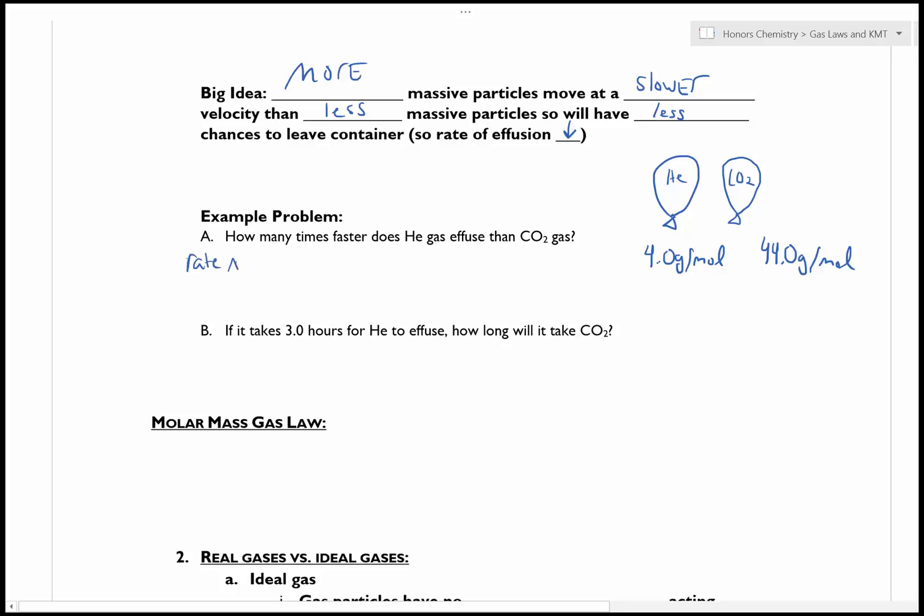My expression is the rate of A over the rate of B is equal to the square root of the molar mass of B over the molar mass of A. All right, so I'm going to solve for this. So I want, how many times faster is He effused than CO2? So I'm going to put He on top and I'm going to put the rate of CO2 on the bottom. And that's going to be equal to the square root of the molar mass of B, which is 44.0 grams per mole, divided by the molar mass of A, which is 4.0 grams per mole.